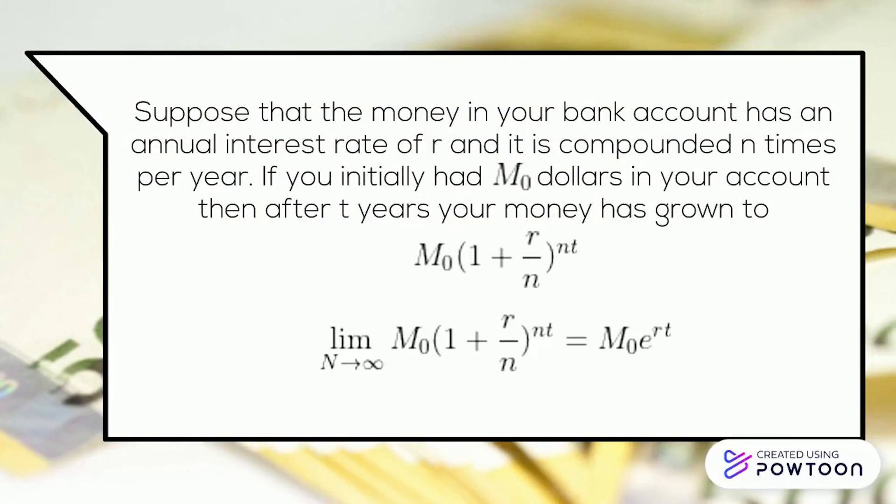In continuous compounding, your money is compounded every infinitesimal time step. This is a little non-rigorous, but you can think about it as taking the number of times per year your account is compounded to infinity. Like this: limit of the function M0(1 + r/n)^(nt) for n approaches infinity equals M0 e^(rt). That's the well-known formula for continuous compounding.